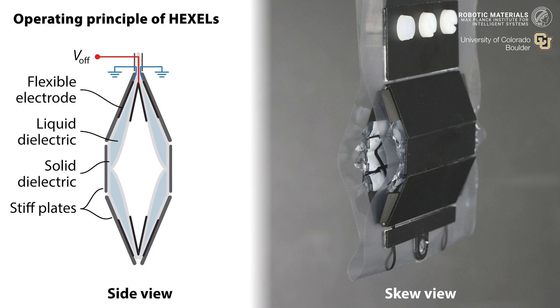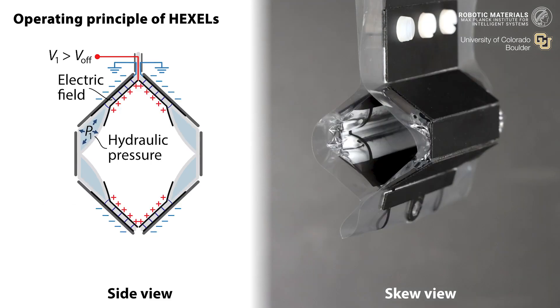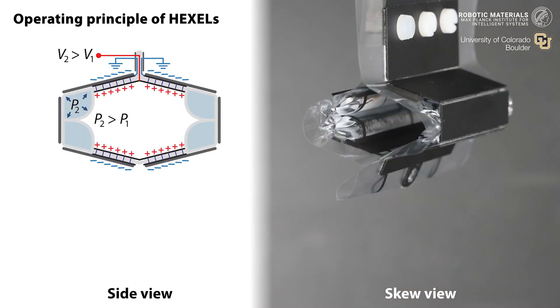Soft actuators sit inside an exoskeleton of plates. Applying a high voltage to the actuators causes the HEXEL to transform from a tall narrow prism to one that's wide and flat.